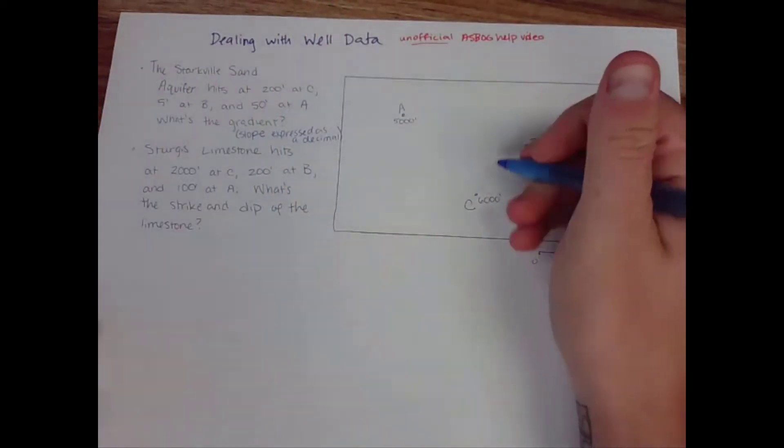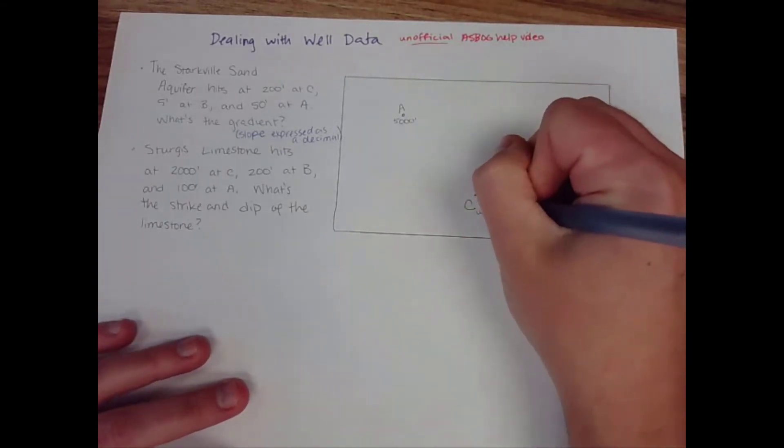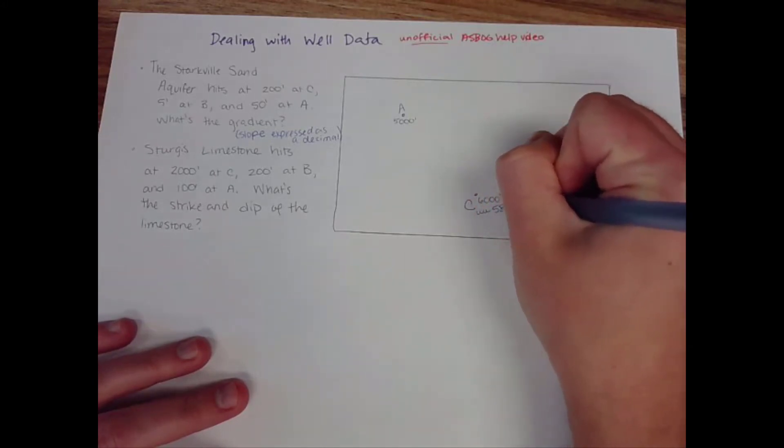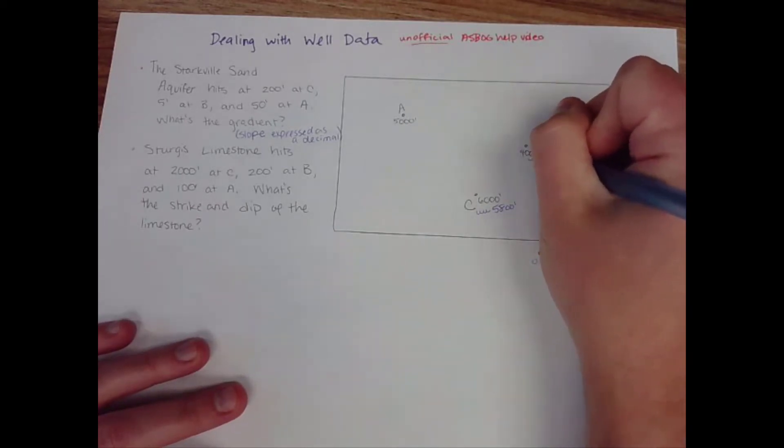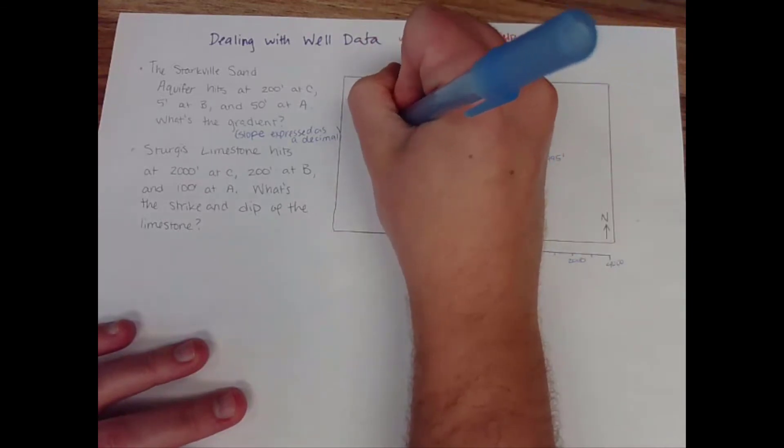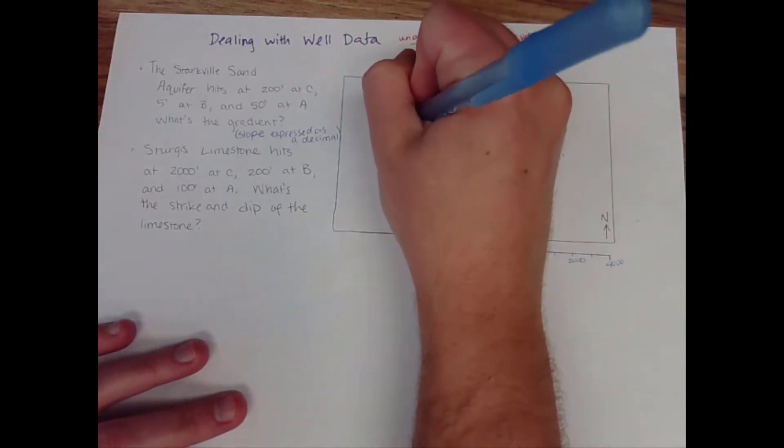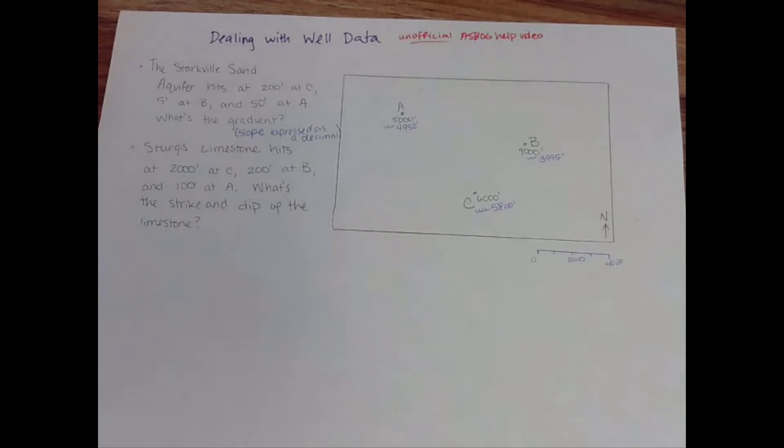Okay so here at C we're 200 feet below ground so I'm going to draw a little water symbol so I remember what I'm doing and I hit that at 5,800 feet. For B we are going to hit that same aquifer at five feet below ground so that's 3,995 feet and for A we're going to hit it at 50 feet below ground which is 4,950. So all I've done is subtract those depths from my surface elevation.